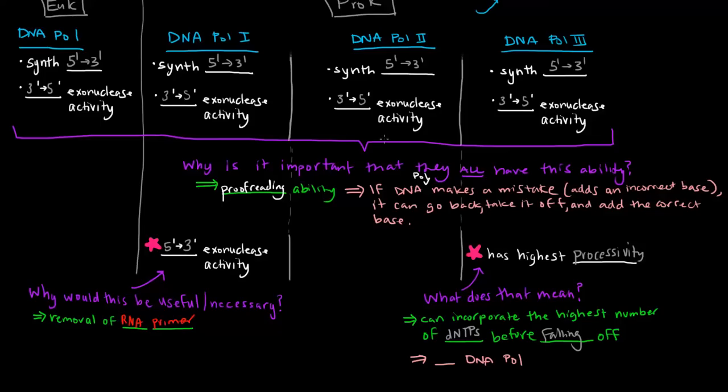DNA polymerase 2 could add about 1,500. DNA polymerase 3 can add about half a million. That's insane.